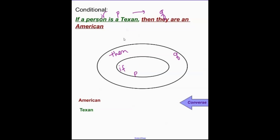And all we're going to do is put the meat of it right here, just one word, Texan, and American will go right here. If the person is a Texan, then they're an American. If P, then Q. That's how we would read this.